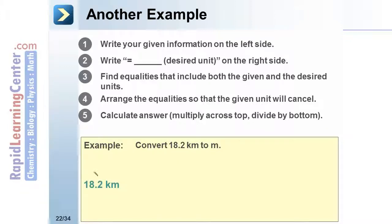18.2 kilometers is the given information. Meters is the desired unit. The equality containing the two units is 1,000 meters equals one kilometer. In order to cancel kilometers, that unit needs to be placed on the bottom.